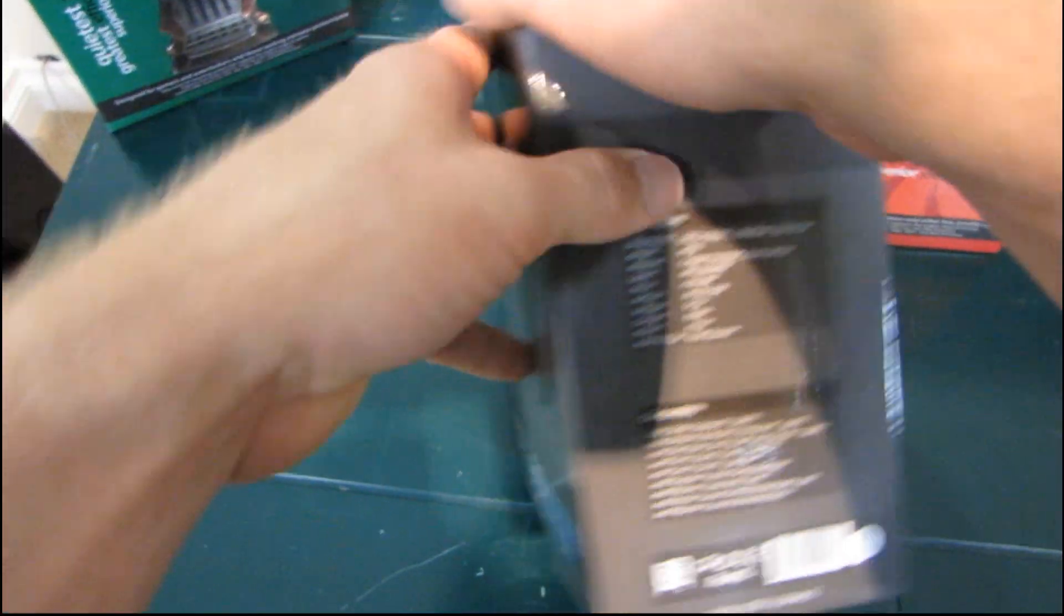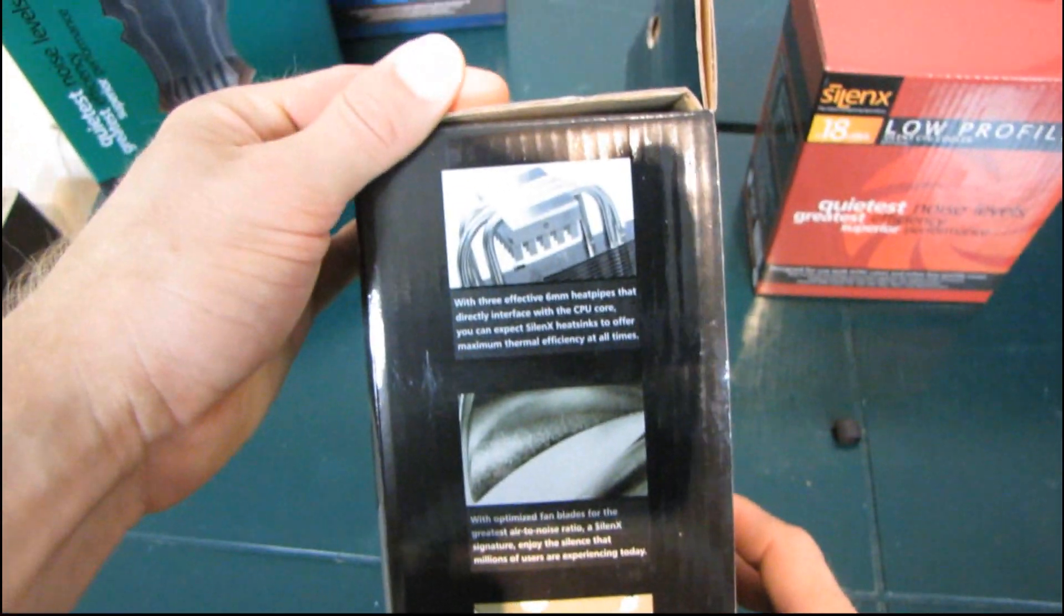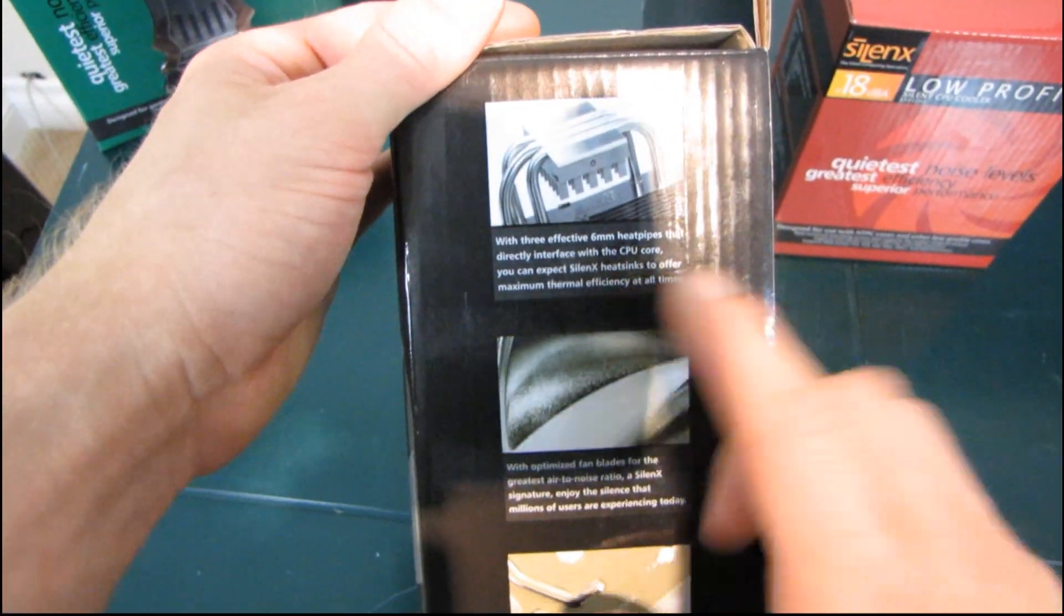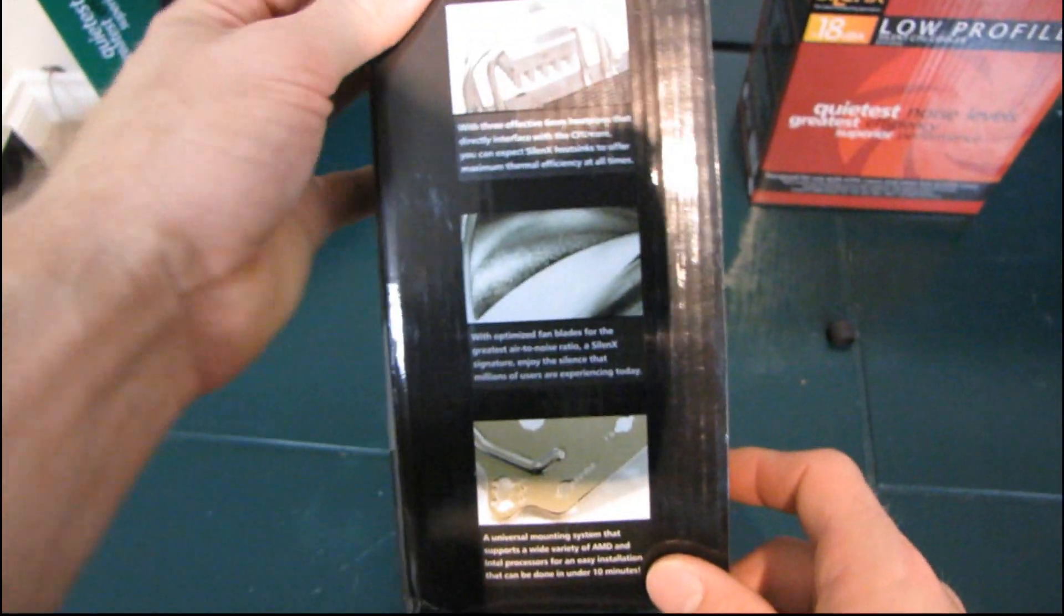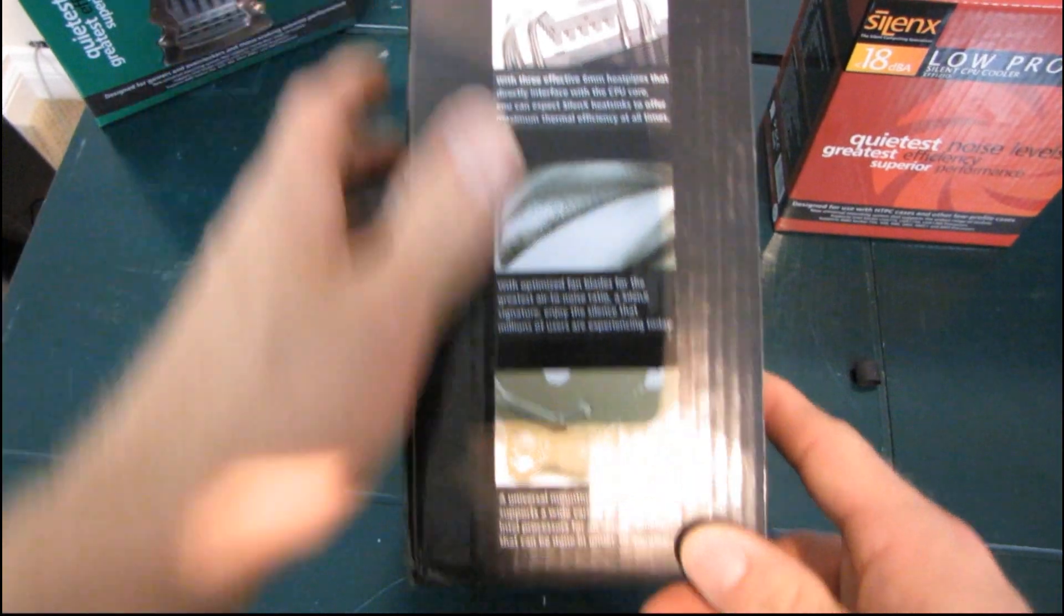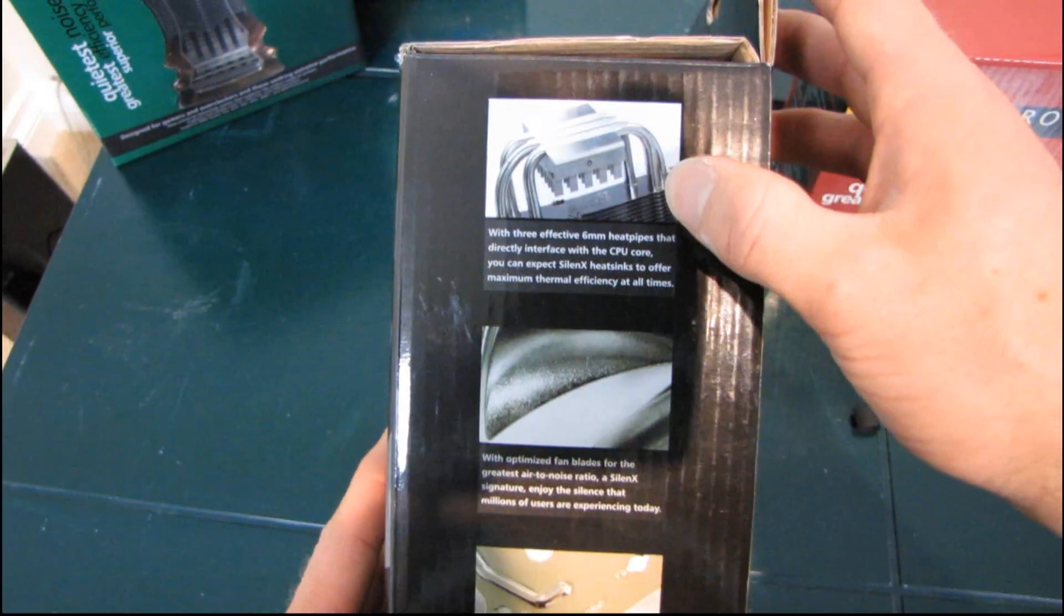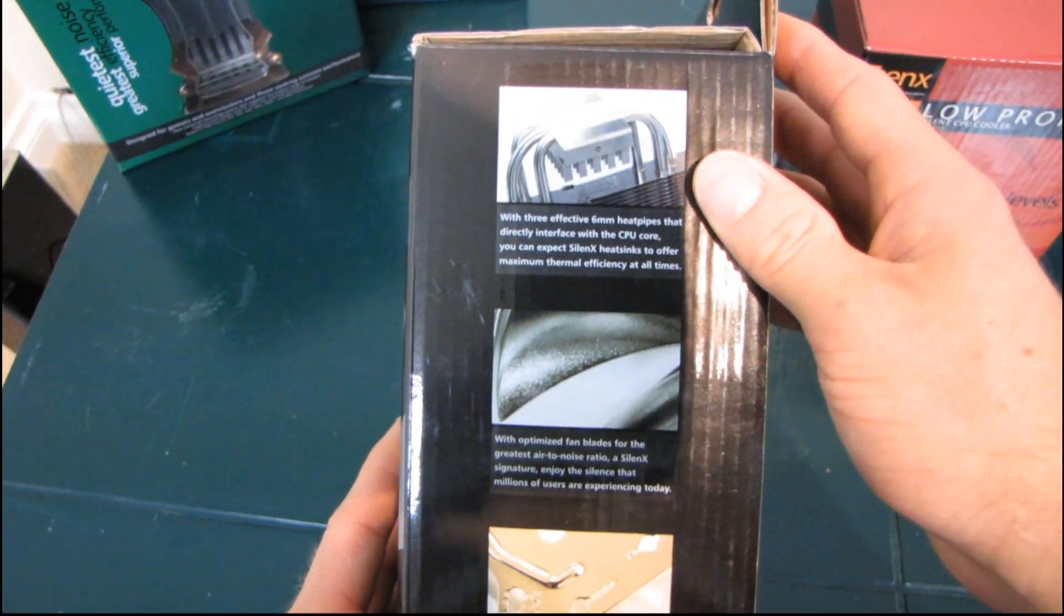Weighs about a half a kilogram, so that is about three quarters of a pound or so. You've got three six millimeter heat pipes. So that is substantially less than the Extreme Series cooler, although it is less expensive. So these are making direct contact with the bottom of the CPU, or the top of the CPU.